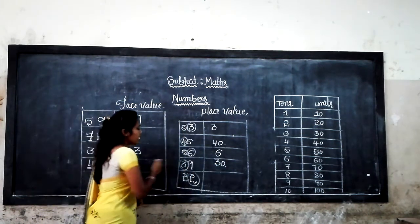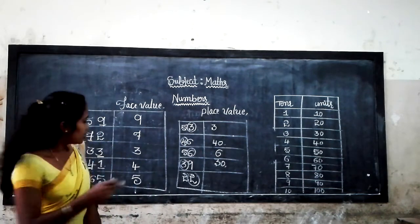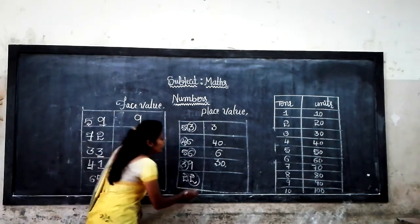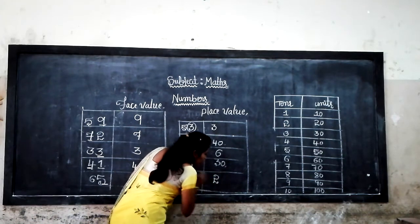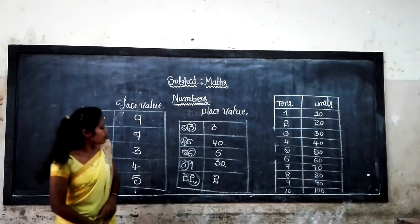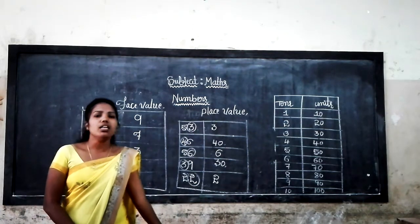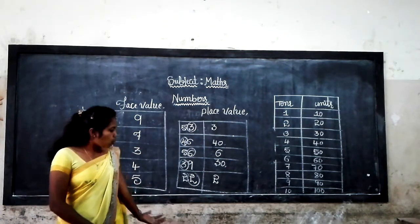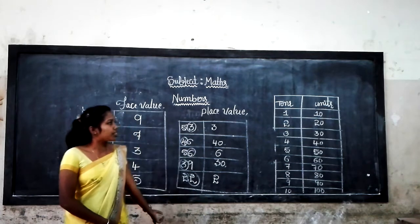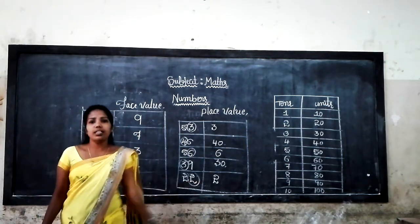Then the last one: 22. The circled number is 2 — 2 is in the units place, so the place value is 2. I hope you understand the concept of place value and face value.